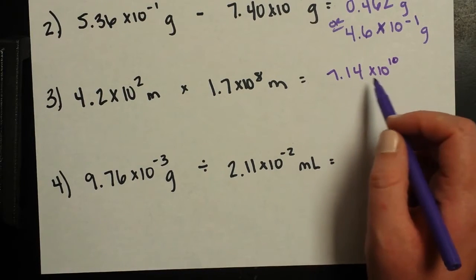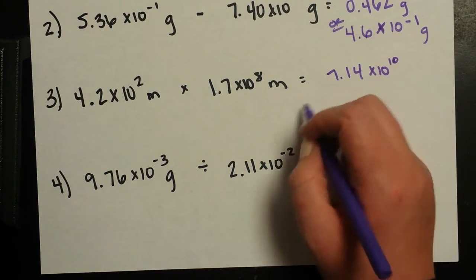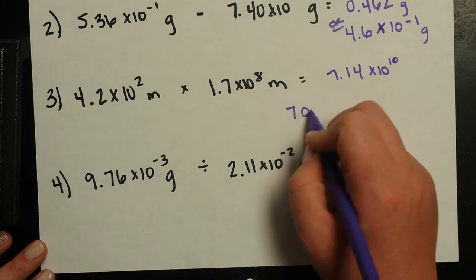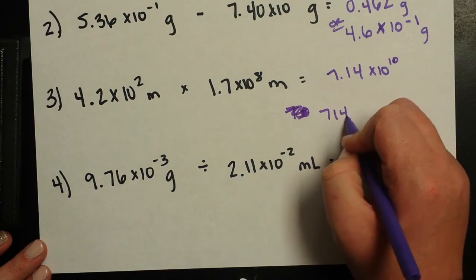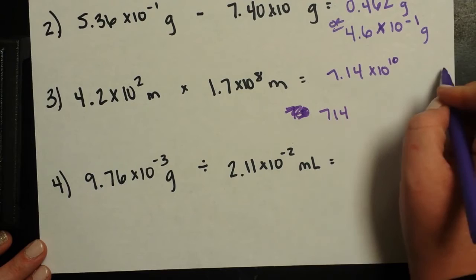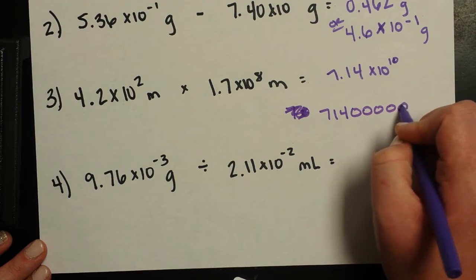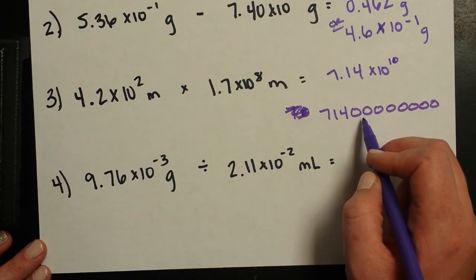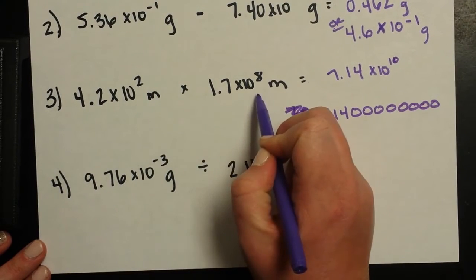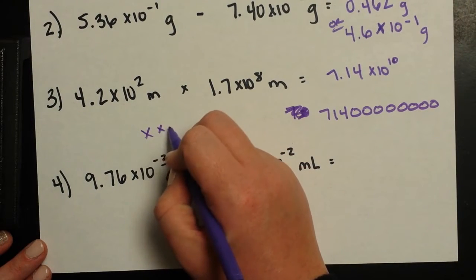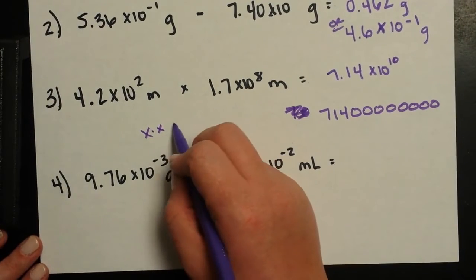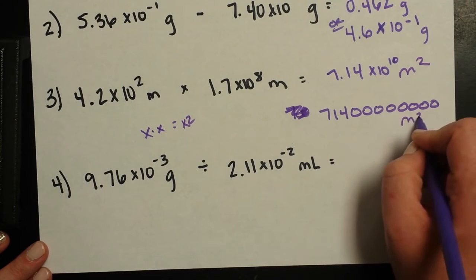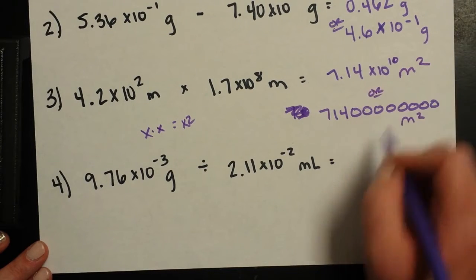If we were to expand that, we just move our decimal place to the right 10 times. So go ahead and do it just for fun. I'm going to move it to the right two times. So 7, 1, 4. That's only two times though, so I need to move it eight more times. I'm going to need eight placeholder zeros. So this is the number my calculator gave me. It means this. And here I've got meters times meters. So just like x times x, it's going to be x squared. The same thing happens with meters. So now I've got meters squared.